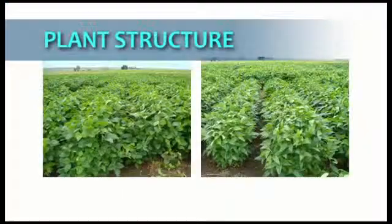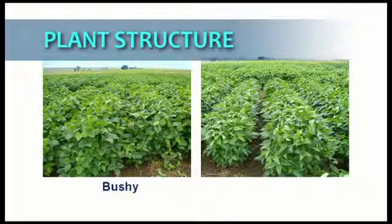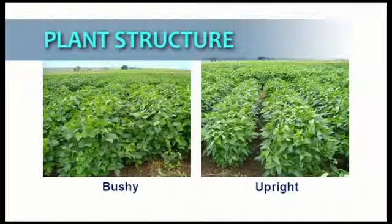Soybean plants are generally of two structures: bushy type and upright type. When deciding on plant density and row width for a specific cultivar, it is important to take account of the structure type of the cultivar.